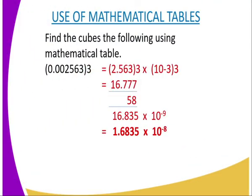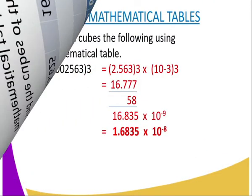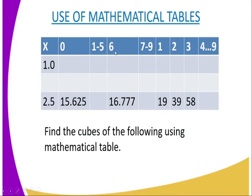And then you move to 6 in the middle column, 0.6, the 6 is here. You read the number, you drop up to where the column of 2.5, where it coincides with the row of 2.5, where it coincides with 6. And the answer becomes 16.777.